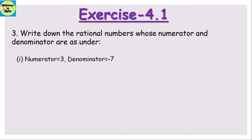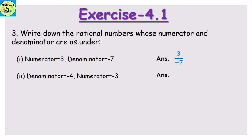Question number 3: write down the rational numbers whose numerators and denominators are given. Here numerator is 3 and denominator is -7, so the answer will be 3/(-7). Next: denominator is -4 and numerator is -3. Please take care that here denominator is given first and numerator later, so we write -3/(-4) because numerator is always on top and denominator is on the bottom.